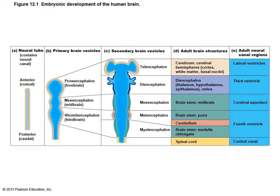These are the various structures that the brain and spinal cord are developed from. It starts off with just the neural tube, formed very early in embryonic development from the ectoderm — one of the three germ layers. It then divides into lobes: the prosencephalon, mesencephalon, and rhombencephalon, and secondary brain vesicles give rise to the mature brain structures.